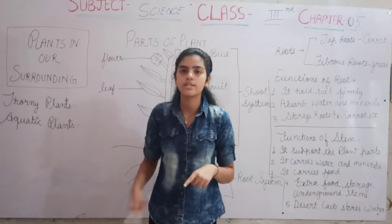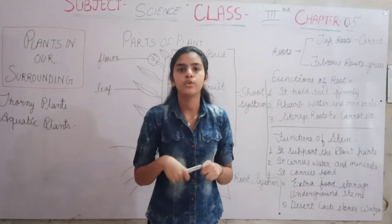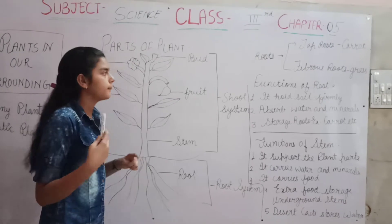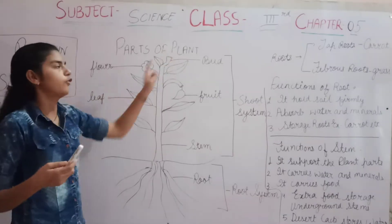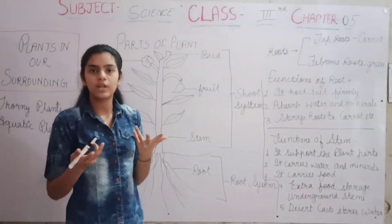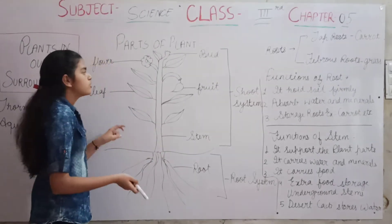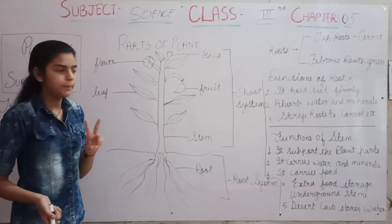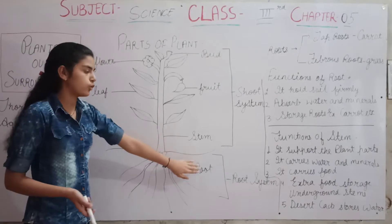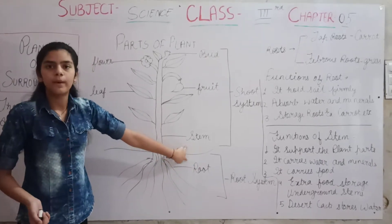Now we will go to the main topic that is parts of plants. We will read how many parts and which type of parts the plants have. Today we will read about two parts: stem and root.